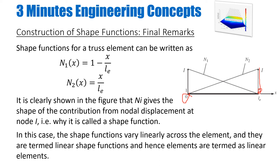The second property is partition of unity, which states that the sum of all shape functions for an element should equal 1 at any location in the element. So at x = 0, N2 = 0 and N1 = 1, giving a sum of 1. Somewhere in the middle it might be half plus half, equaling 1, and similarly at the other end. Our truss element satisfies this property. Note that the shape functions give you the contribution of the nodal displacements at each node, which is why they are called shape functions — sometimes also termed interpolation functions in the literature.